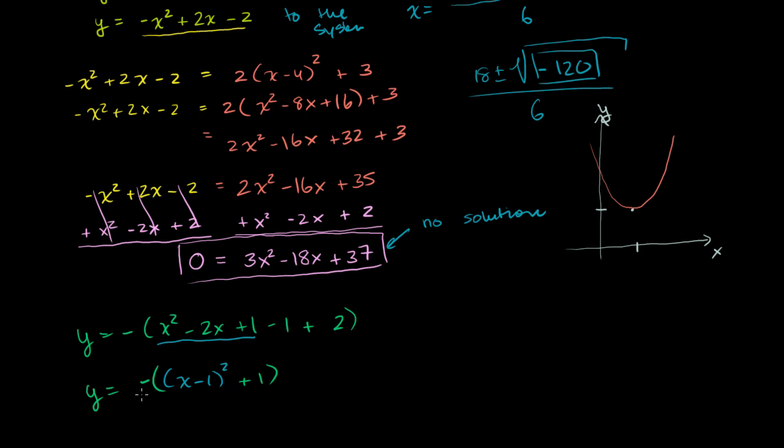Or if we want to distribute the negative, we get y is equal to negative x minus 1 squared minus 1. So here the vertex occurs at x is equal to 1, y is equal to negative 1. The vertex is there. And this is a downward opening parabola. We have a negative coefficient out here on the second degree term. So it's going to look something like this.